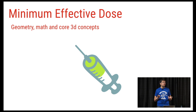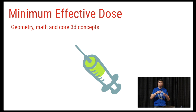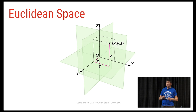Who here has actually written an app using OpenGL ES 2 or 3? All right, so a few people — share notes with the others if they look confused. So, core concepts: we're going to be talking about 3D space. You're probably familiar with the idea of Euclidean space — X, Y, and Z.